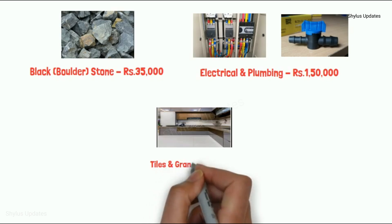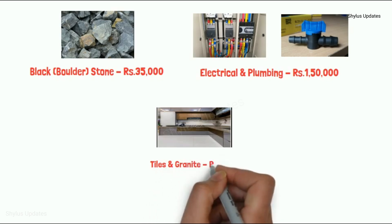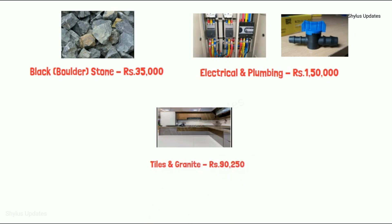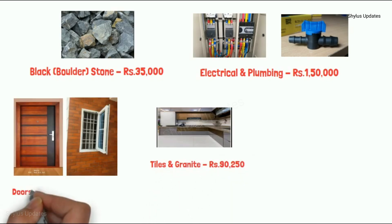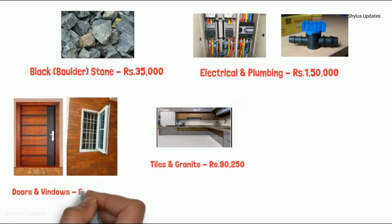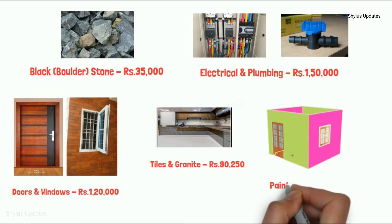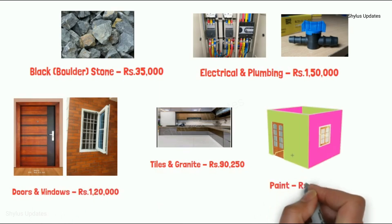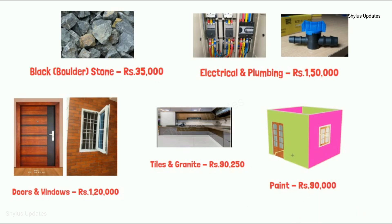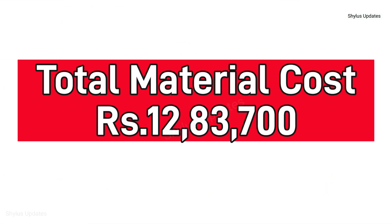Tiles and granite Rs. 90,250; doors and windows Rs. 1,20,000; paint Rs. 90,000. When you add all these material costs, you get the total material cost of Rs. 12,83,700.